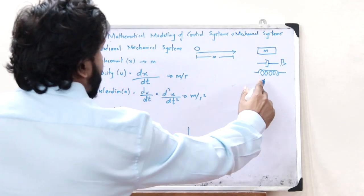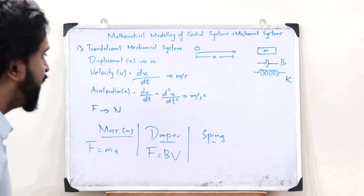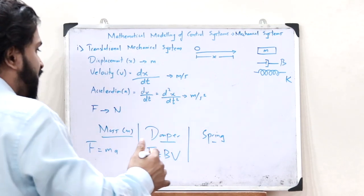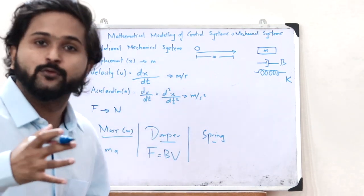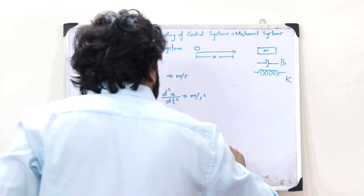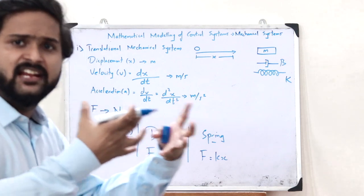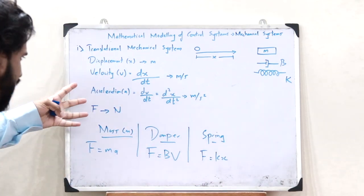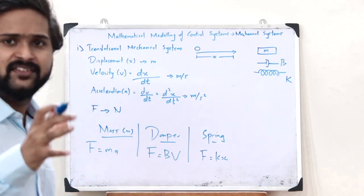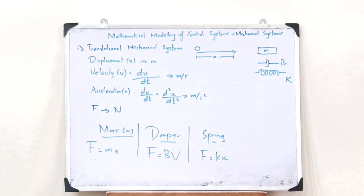If we consider a particular spring with spring constant K, then the force acting on that spring is given as F = Kx, where x is the displacement of that spring. This is the basic idea behind a translational mechanical system — these are the key elemental concepts, and it is with these that we create a mathematical model of a translational mechanical control system.